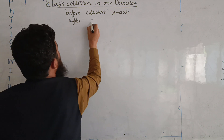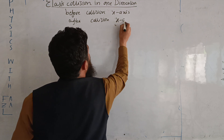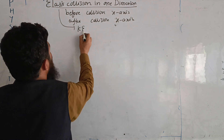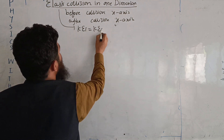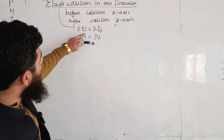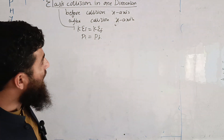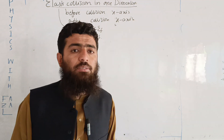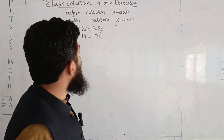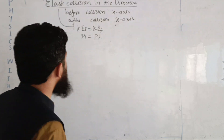After collision, the bodies are also moving along the x-axis. This is elastic collision in one dimension. The kinetic energy initial equals kinetic energy final, and momentum is also conserved. So before collision, the bodies move along the x-axis, and after collision they also move along the x-axis — this is elastic collision in one dimension.